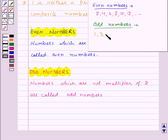1, 3, 5, 7, 9, 11, 13 and so on are all odd numbers as they are not the multiples of 2.